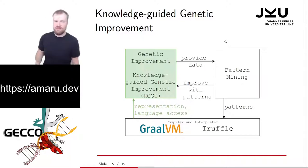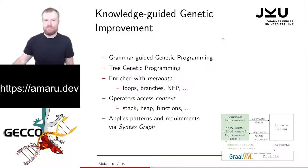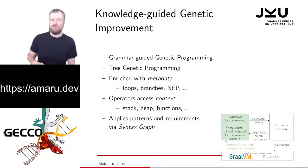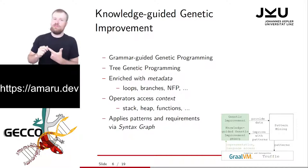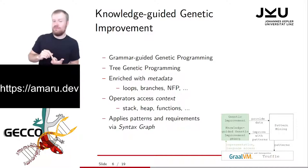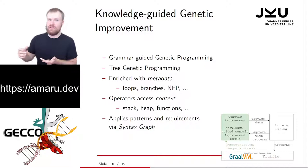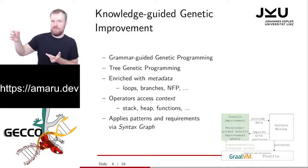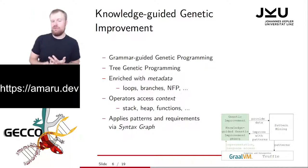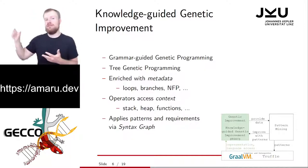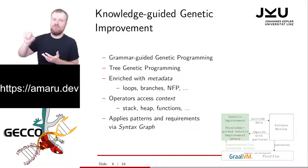Knowledge-guided genetic improvement is basically a combination of grammar-guided genetic programming and typed genetic programming. We use abstract syntax trees, and because we use the Truffle information, we can only produce abstract syntax trees that are actually correct in the language — they will always compile. They might not run due to random exceptions, but they will always compile. We enrich all of that with metadata: for example, a for and a while are loops, an if is a branch, and even an or and an and are branches. We capture non-functional properties by brute-force mining different language concepts and measuring their impact on memory and runtime performance.